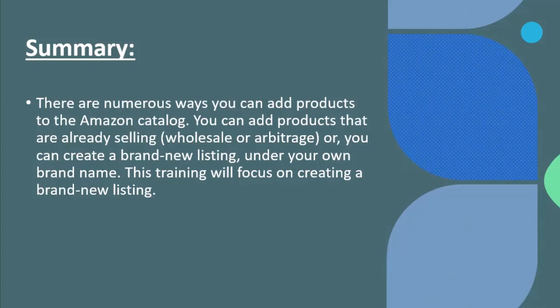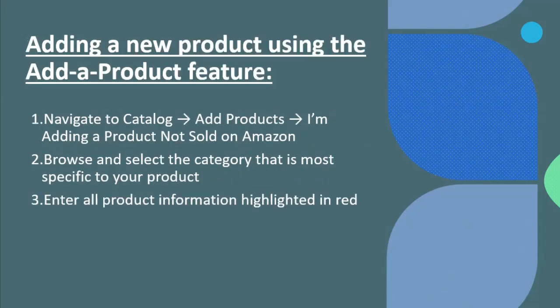To add a new product, navigate to Catalog, then Add Products. Select the option 'I am adding a product not sold on Amazon.' Select that option to proceed with creating a new listing.